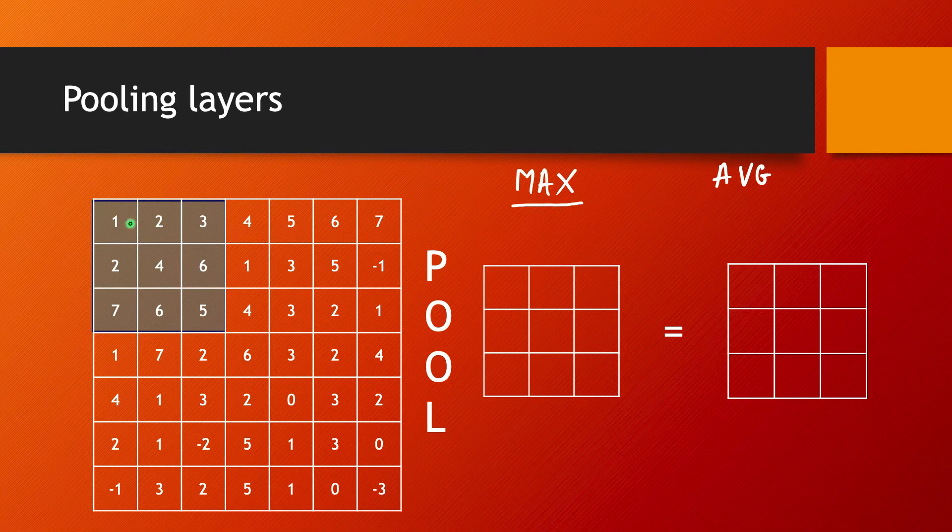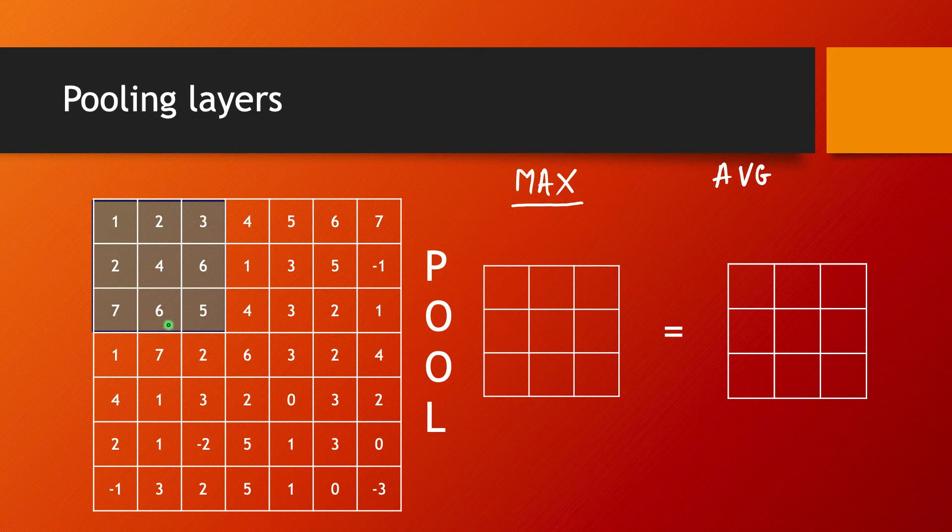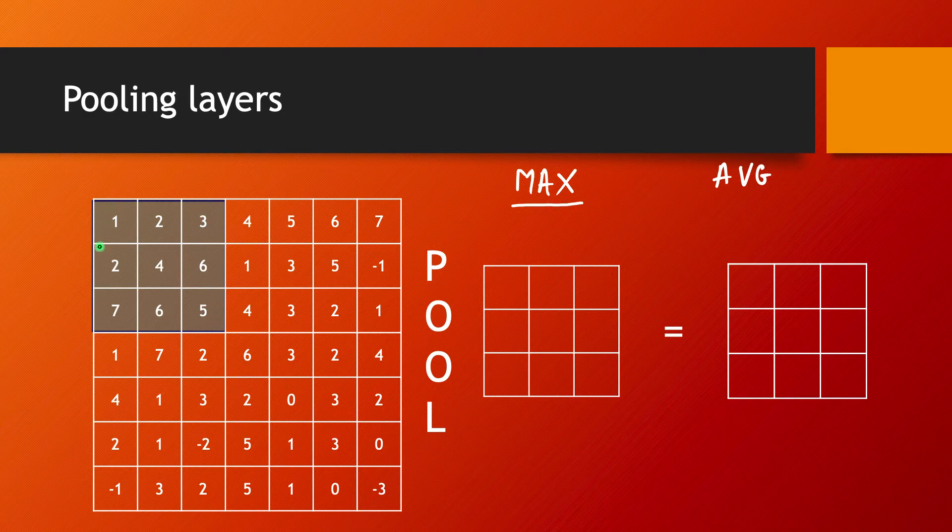If you do have indeed a max pooling layer, the idea is that once you place the filter on top of your input, you are going to take a look at the values in your input in that location that's covered currently by the filter. We are looking at this gray area in our input and we simply take the maximum of the values in your input that come into this area covered by the filter.